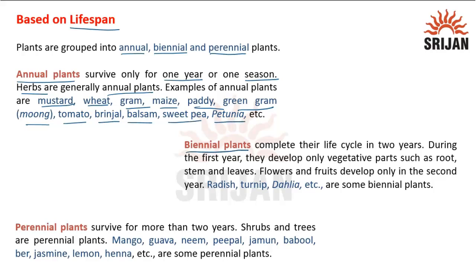Biennial plants complete their life cycle in two years. During the first year, they develop only vegetative parts such as root, stem, and leaf, and flowers and fruits develop only in the second year. Examples are radish, turnip, dahlia, etc.